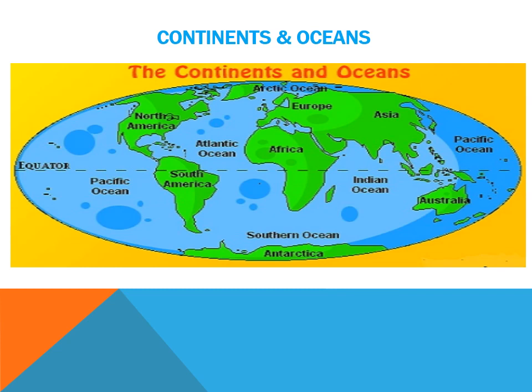Children, do you know what is the biggest continent? By area, Asia is the largest continent at 44,391,162 square kilometers. It is also the largest by population with more than 4 billion people. There is quite a bit of debate as to how many continents there are. Some areas of the world combine Asia and Europe into one continent called Eurasia.